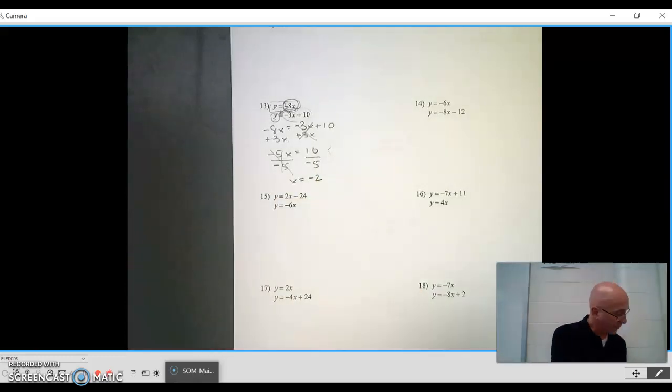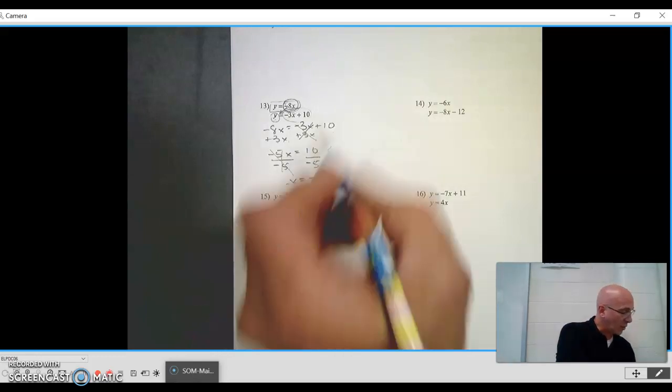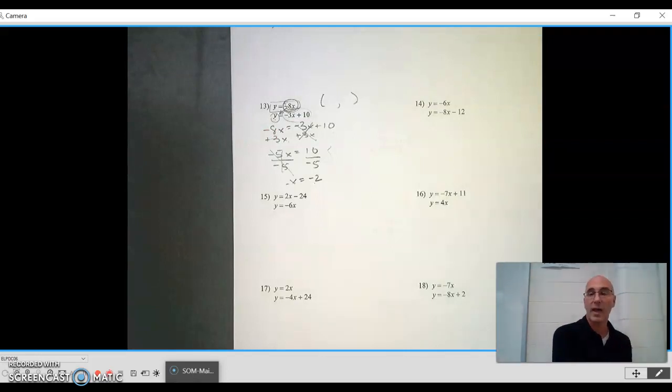So I'm halfway there. I found the x value of my ordered pair. The answer is going to be an ordered pair. So what value of x and what value of y make both equations true?